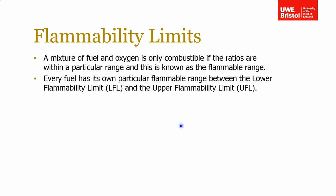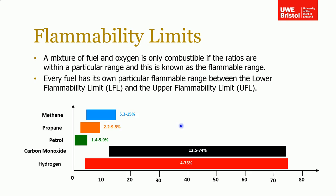Going back to the flame triangle — you need oxygen and fuel in the right ratios. Fuels have what are called flammability limits, defined by the lower flammability limit and the upper flammability limit. This changes for each fuel. Examples include methane, propane, petrol, dodecane, and hydrogen. The x-axis shows the percentage of fuel in air. For hydrogen, you need around 4% hydrogen in air to sustain combustion.